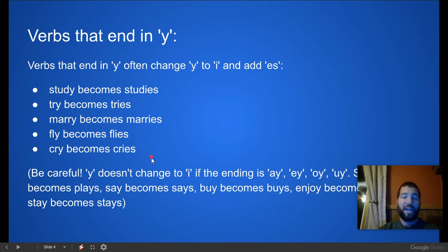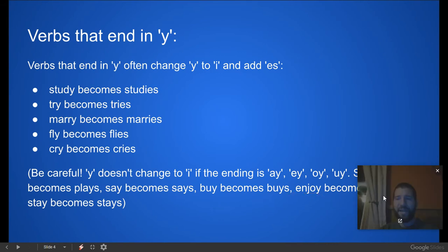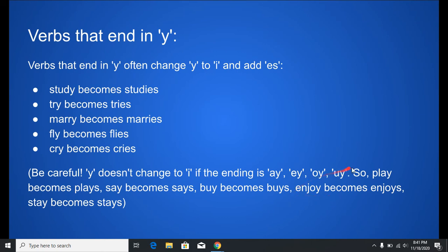There are times where we cannot change the Y to an I and add E-S, and that is when there is a vowel in front of the Y. So if there's a vowel in front of the Y, we do not change it — we just add S. For example, 'play' becomes 'plays' — if we changed the Y to an I and added E-S, it would be P-L-A-I-E-S, which wouldn't make sense. Same with 'say,' which becomes 'says,' and 'buy,' which becomes 'buys.' If you see basically three vowels in a row, you likely made a mistake.